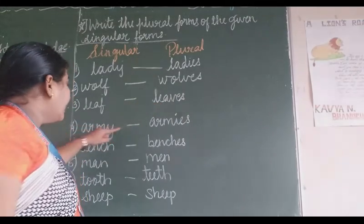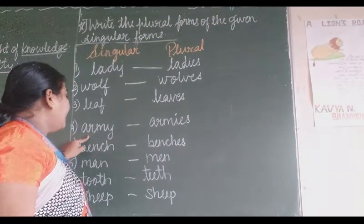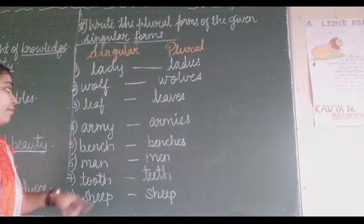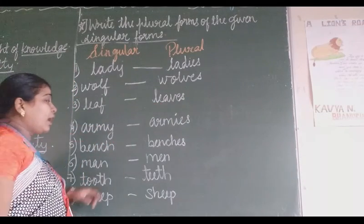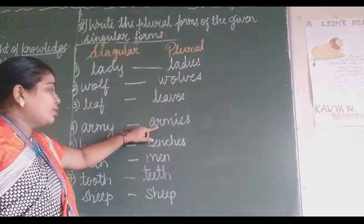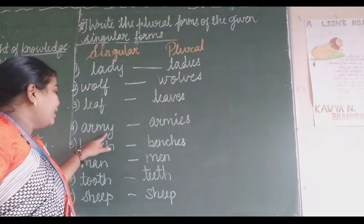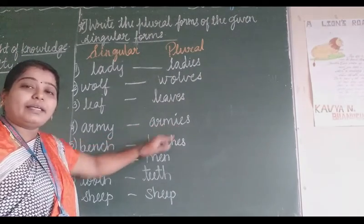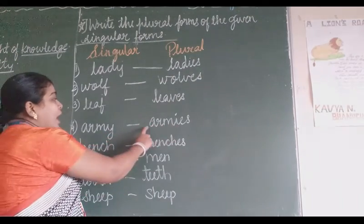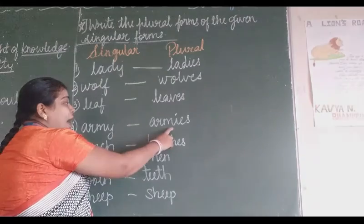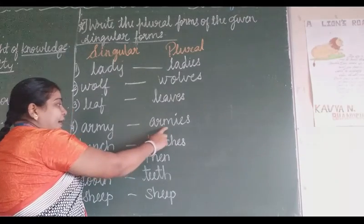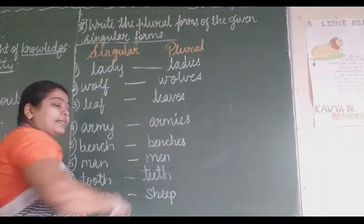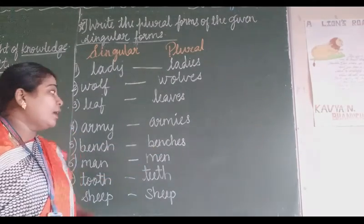Okay, then 'army' — A-R-M-Y. The Y will get changed into I-E-S. So 'army' becomes 'armies' — A-R-M-I-E-S. Armies.